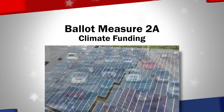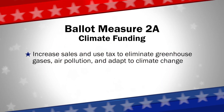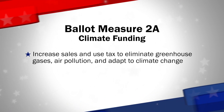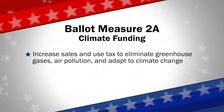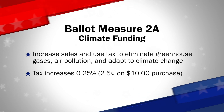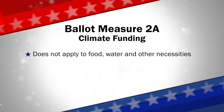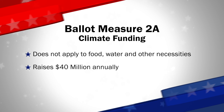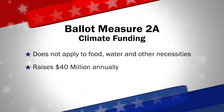The first of the city issues is Ballot Measure 2A, which asks if the city and county of Denver's sales and use taxes should be increased to fund programs to eliminate greenhouse gas emissions and air pollution and adapt to climate change. The tax would be 25 one-hundredths of 1%, which equals 2.5 cents on a $10 purchase. The tax would not apply to food, water, and other necessities, and is expected to raise $40 million annually beginning January 1, 2021.